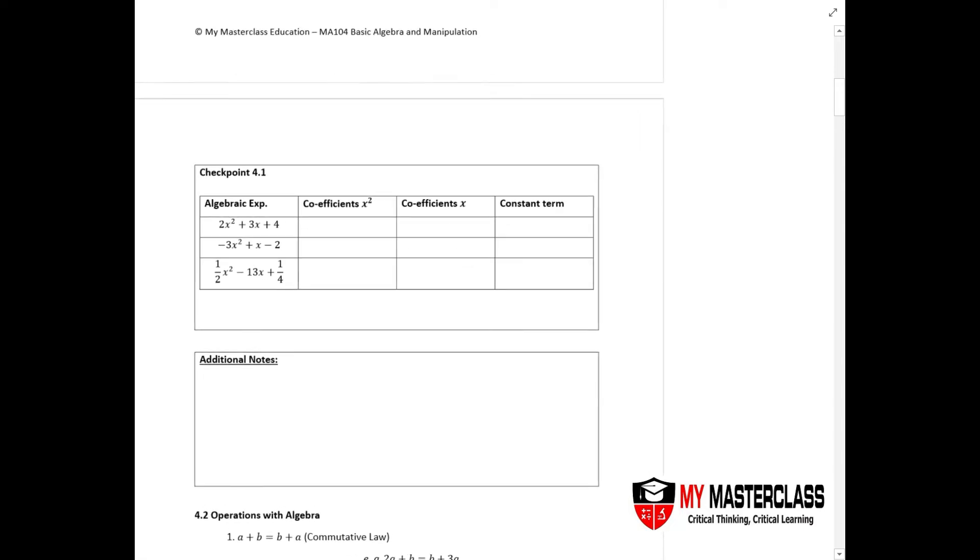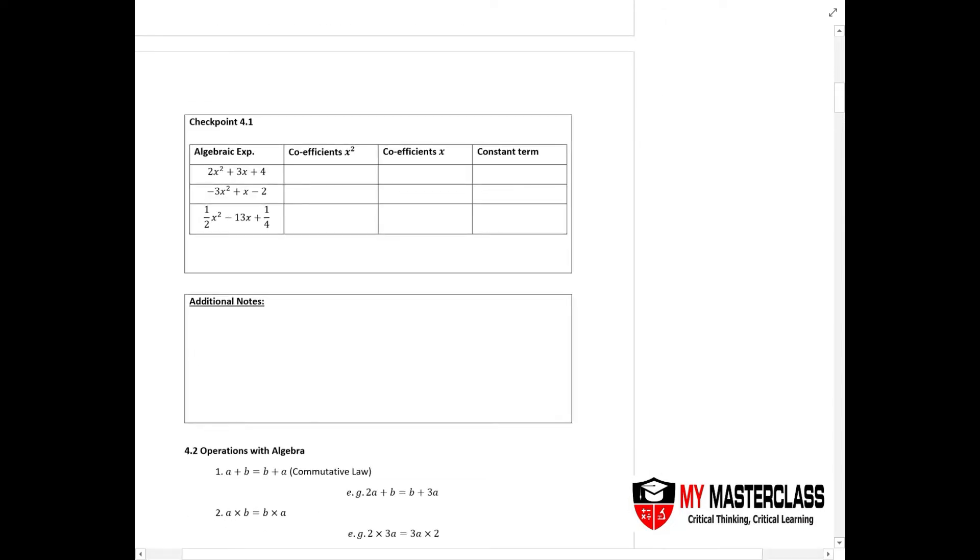Now in the chapter of basic algebra and manipulation, let's take a look at checkpoint 4.1. The first thing you need to learn how to do is to actually identify the coefficients as well as the constant term.